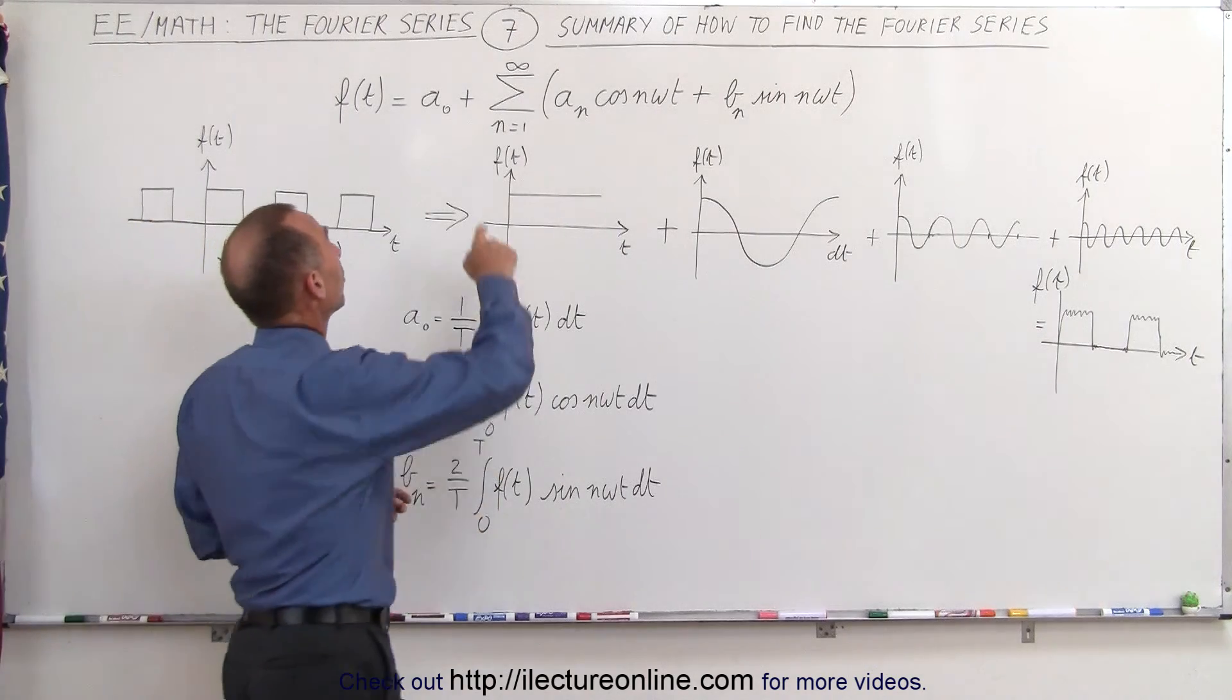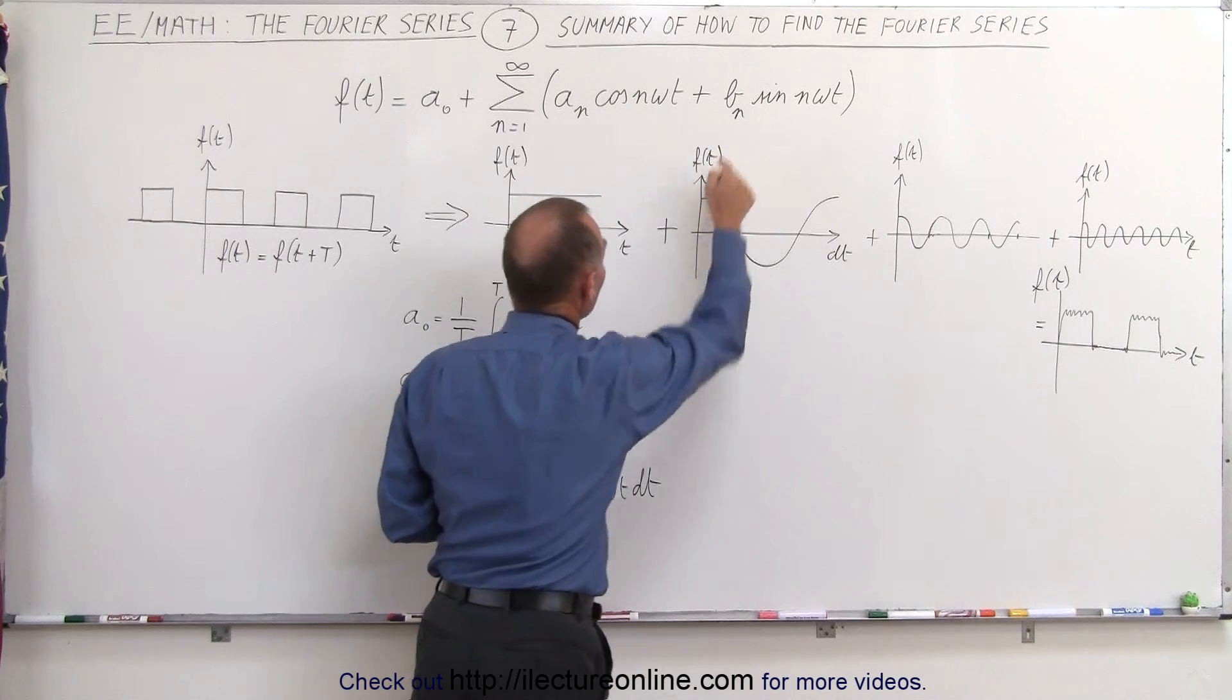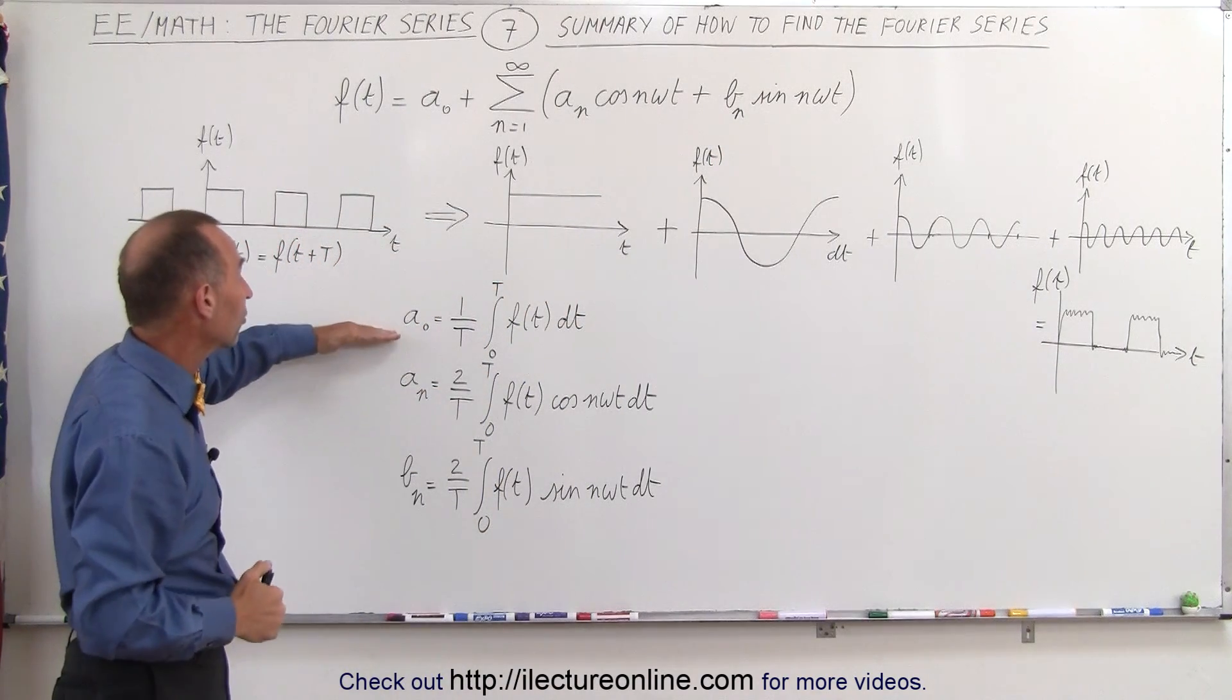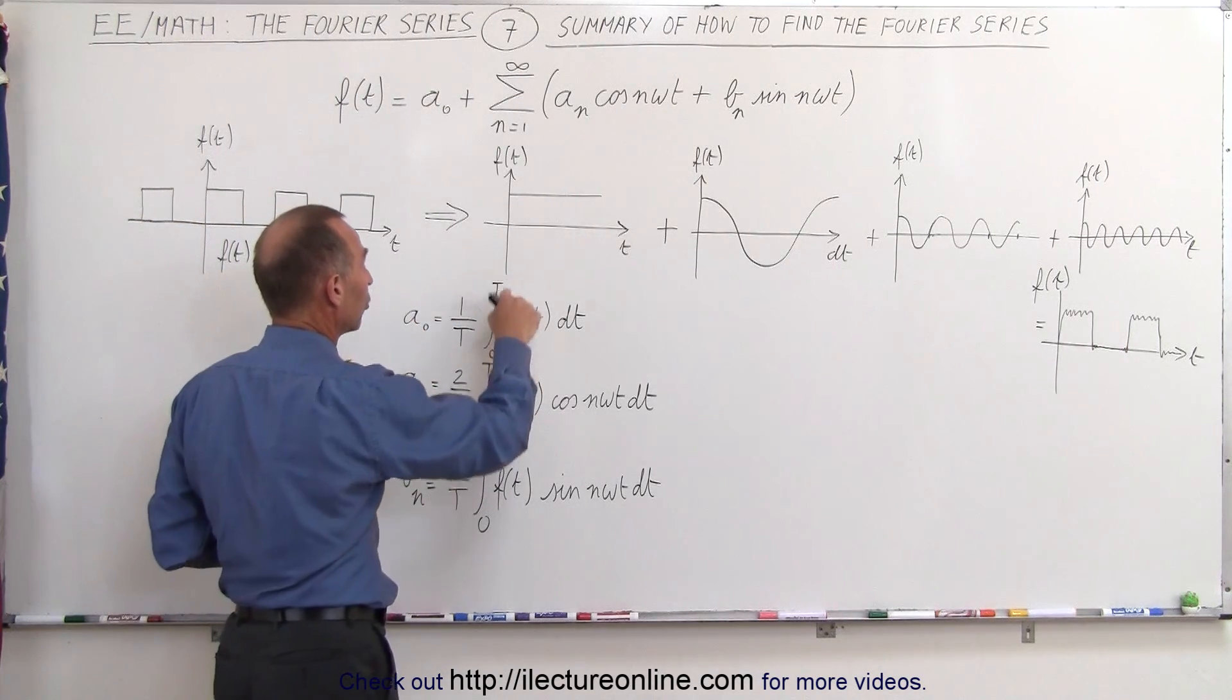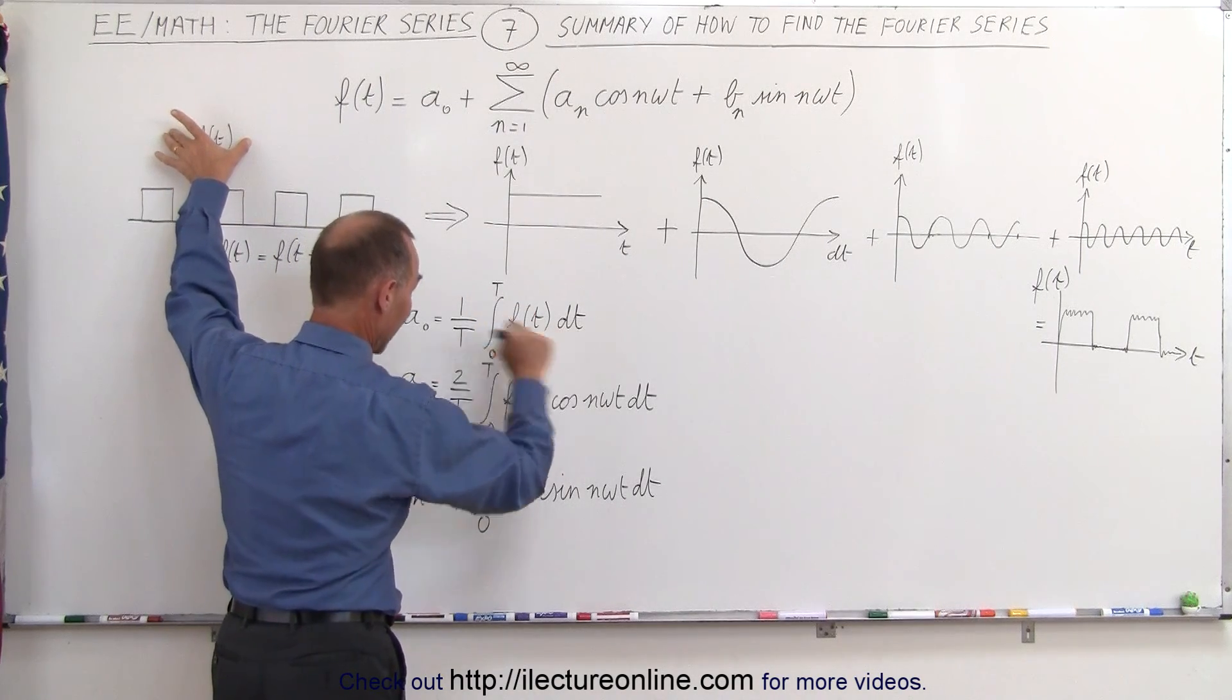It always comes down to finding the constants right here, a sub 0, a sub n and b sub n, and here are the three equations that allow us to find these constants. For a sub 0, it's simply 1 over the period times the integral from 0 to the period of the original function f of t for 1 period times dt.